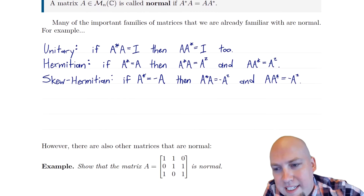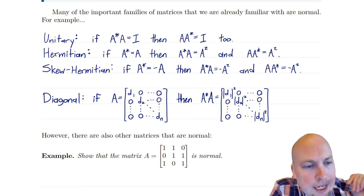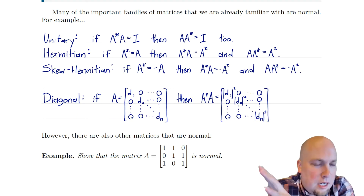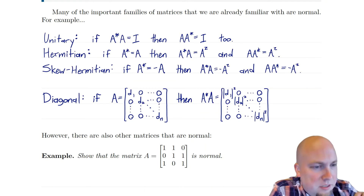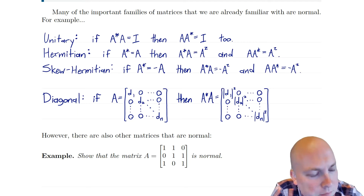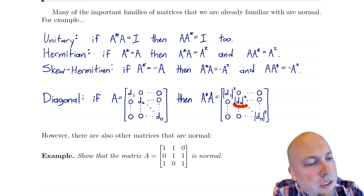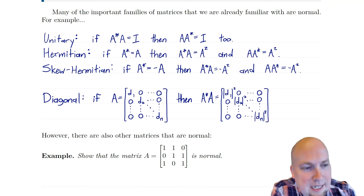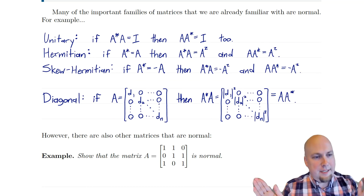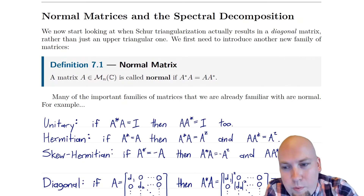Another important family of normal matrices are the diagonal matrices. Diagonal matrices have some numbers along their diagonal and zeros everywhere else — I'll call their diagonal entries D1 up to Dn. If I do the product A* times A, in the top left entry I get D1-bar times D1, which is the magnitude of D1 squared. Similarly, all the other diagonal entries give you the squared magnitude of each Di. But that's the exact same thing if you multiply in the other order, because for diagonal matrices matrix multiplication is entry-wise multiplication — it's commutative. So A*A equals AA*, and diagonal matrices are normal.